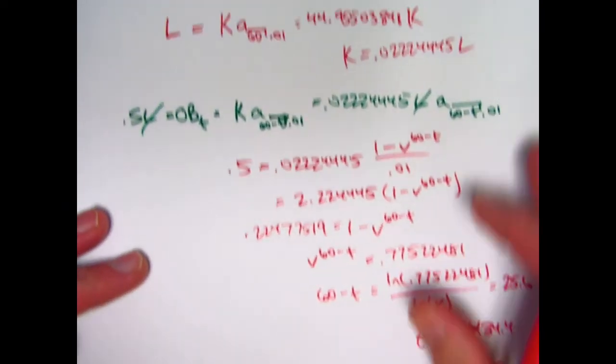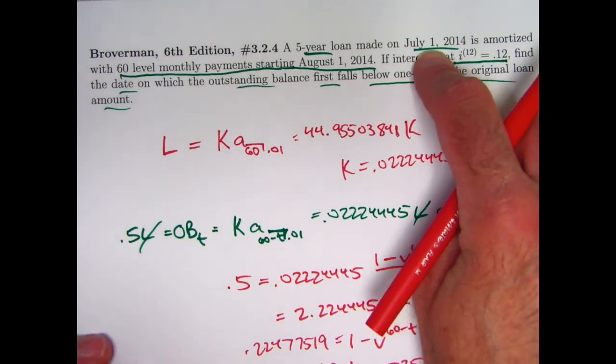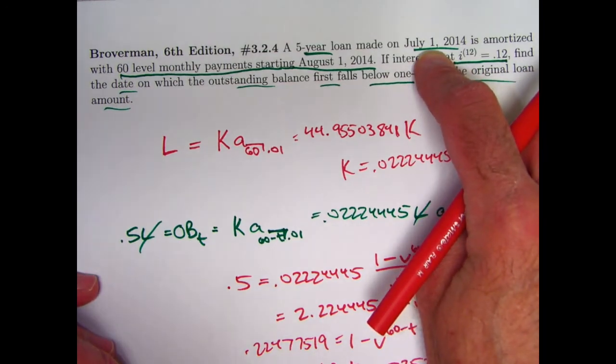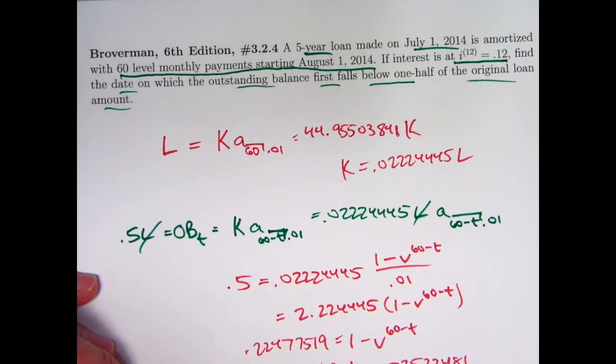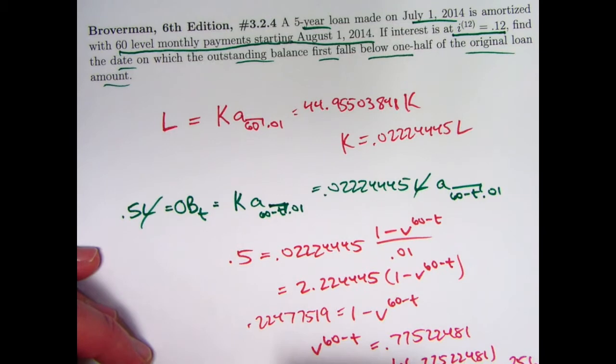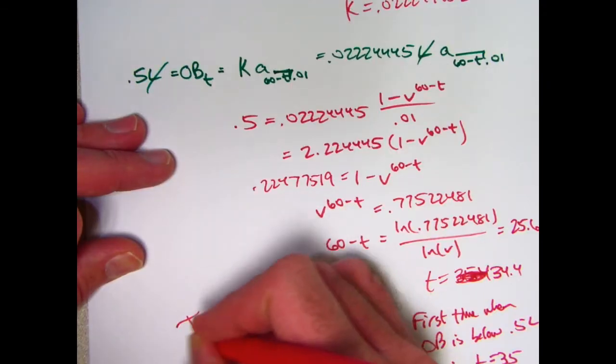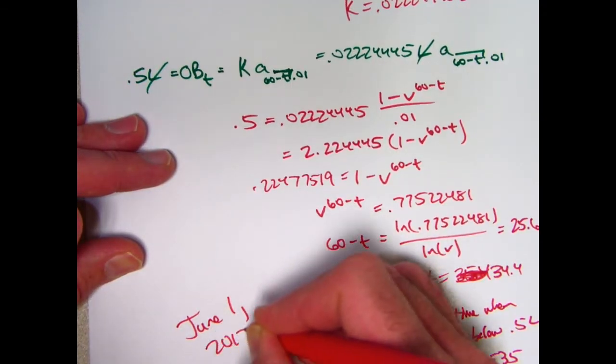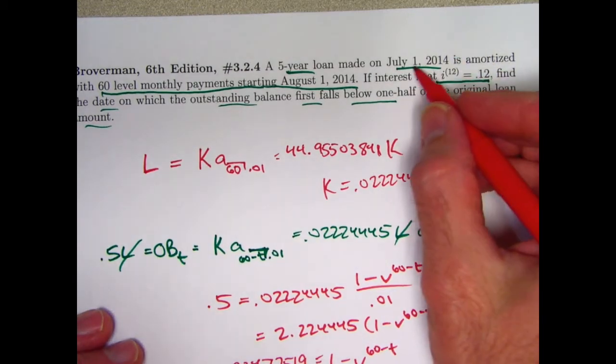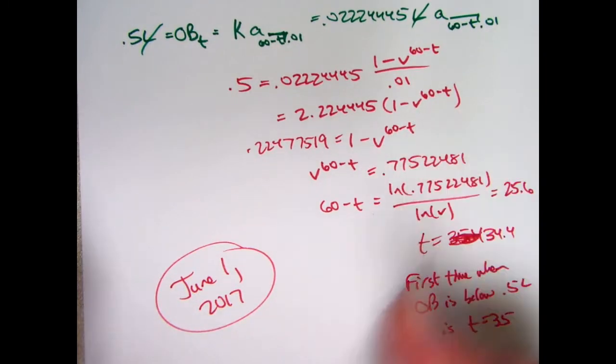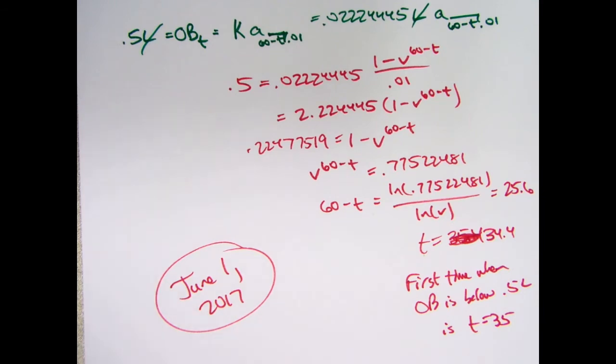These are monthly payments, so that's 35 months. The loan was made on this date, so we need to think 35 months in the future. 36 months would be three years, so 35 months will be one month short of three years. The final answer is going to be June 1st, 2017. Would be 35 months after this, when the loan balance finally goes below half of the original. It's kind of interesting. It happens to be June 11th, 2017 when I'm making this video. So that was just kind of a unique coincidence.